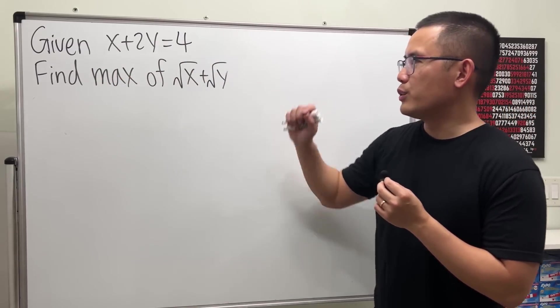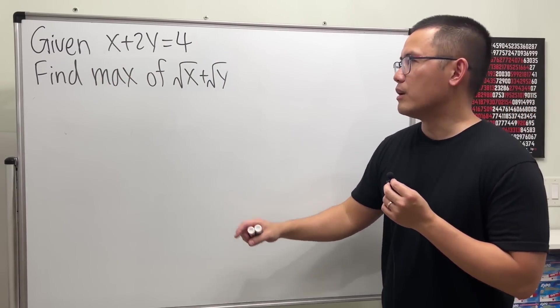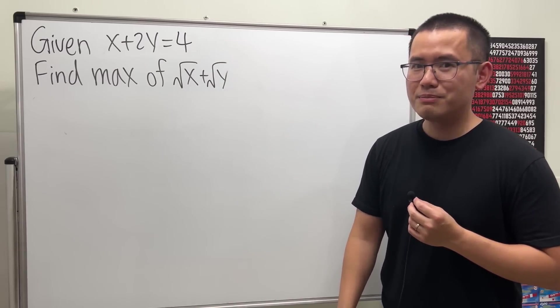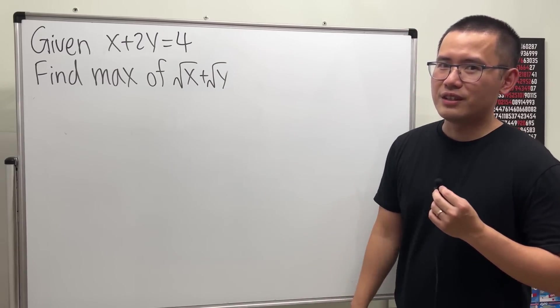We have x plus 2y is equal to 4, and we are going to find the maximum of square root of x plus square root of y. Now, of course, you can just do calculus, but I'll leave that to you. We can check out the video in the description.